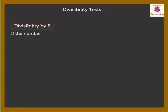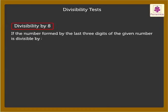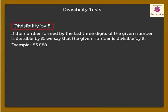Divisibility by 8: If the number formed by the last 3 digits of the given number is divisible by 8, we say that the given number is divisible by 8. For example, look at the number 53,888. Its last 3 digits form the number 888, which is divisible by 8. Thus, 53,888 is divisible by 8.